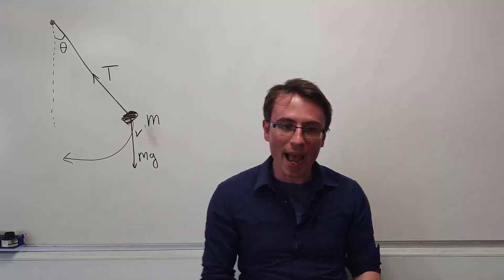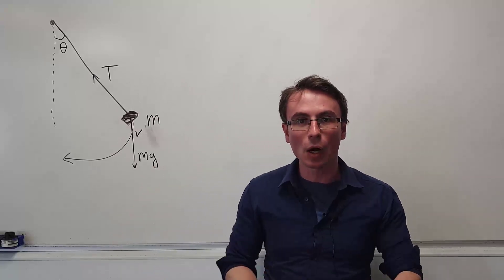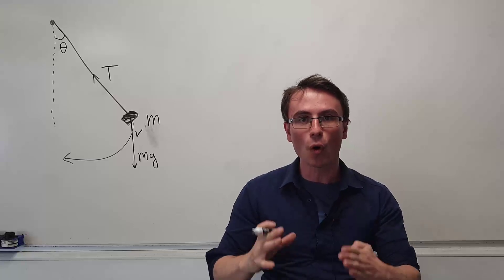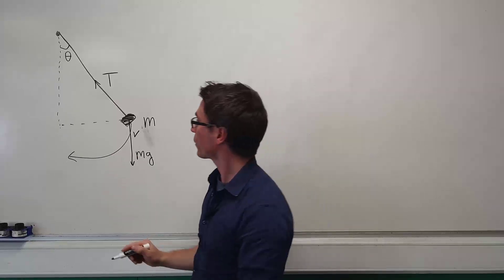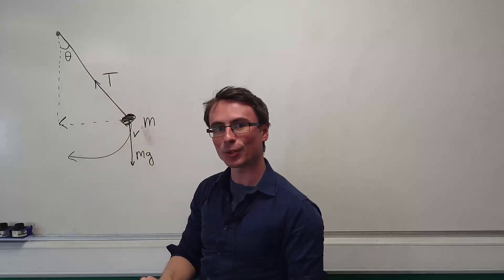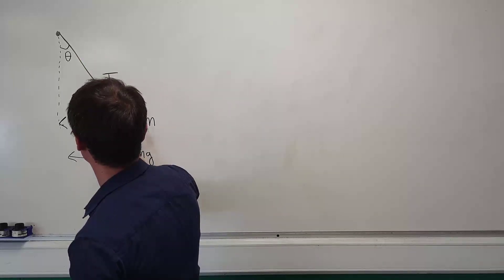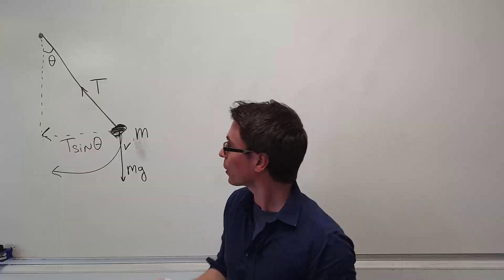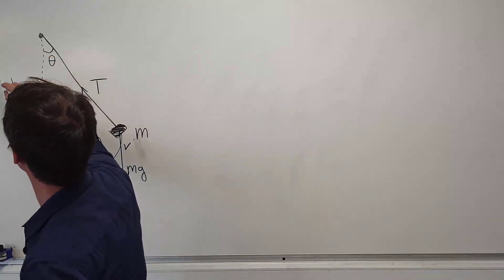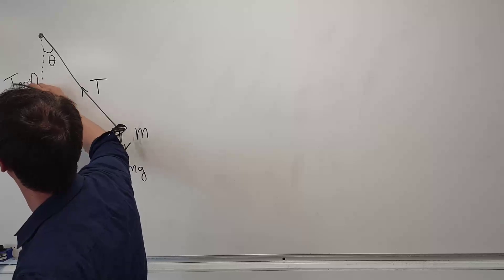Anytime we have circular motion at an angle we need to resolve the components. So the horizontal component of the tension is opposite to this angle, so it's going to be T sine theta, and we also have the vertical component which is going to be T cos theta.